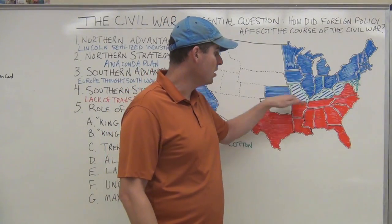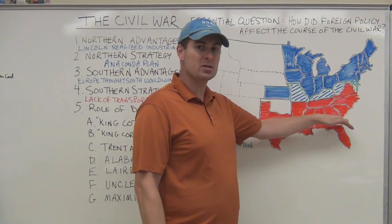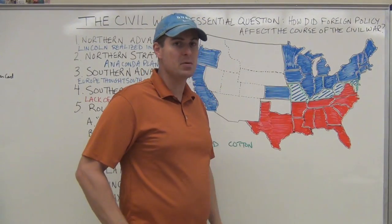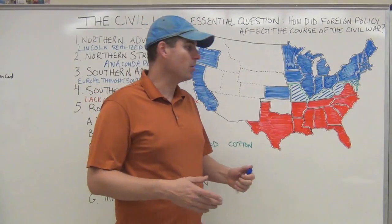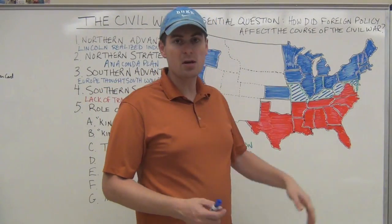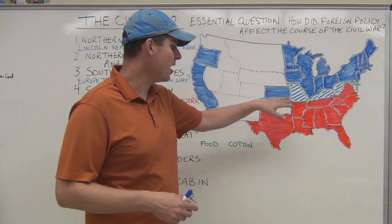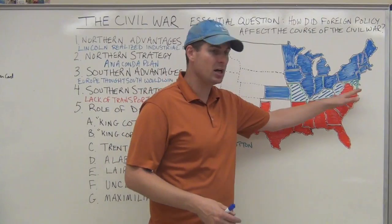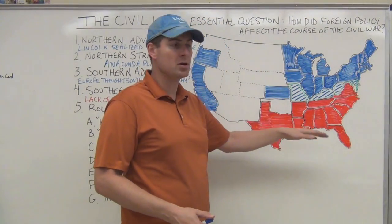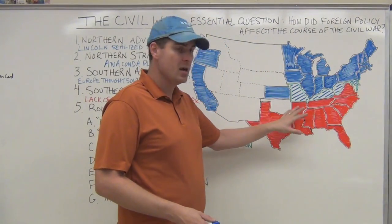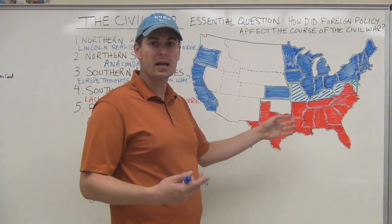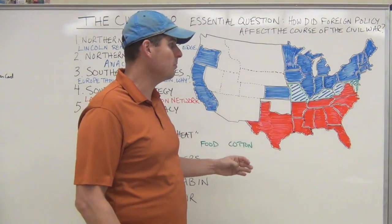The Anaconda Plan has three parts. Number one: blockade the coast. Number two: take control of the Mississippi River, splitting the Confederacy in half. That's later going to be accomplished with the Battle of Vicksburg. This would take away a major artery of transportation for the South and allow the North to start cutting the South into pieces. Sherman then goes to Atlanta and cuts the South further. Divide and conquer is going on. The eventual capture of Vicksburg is a big help in accomplishing the second tenet of the Anaconda Plan.